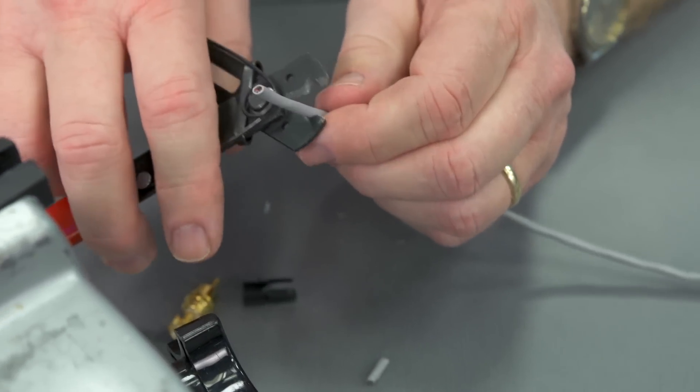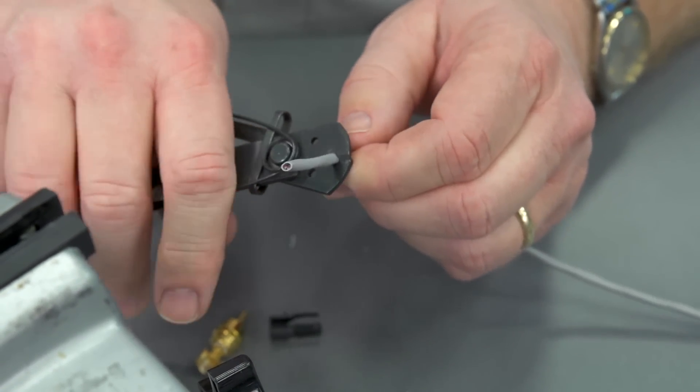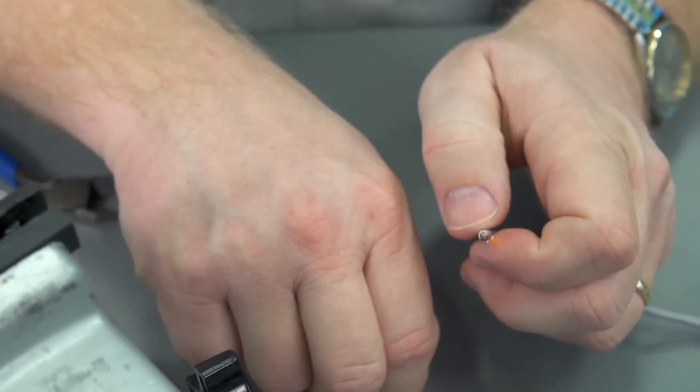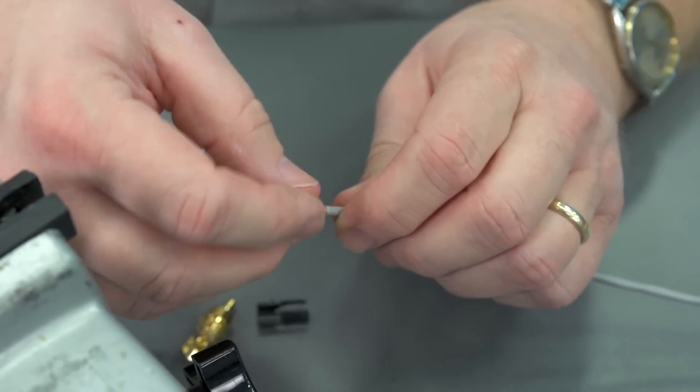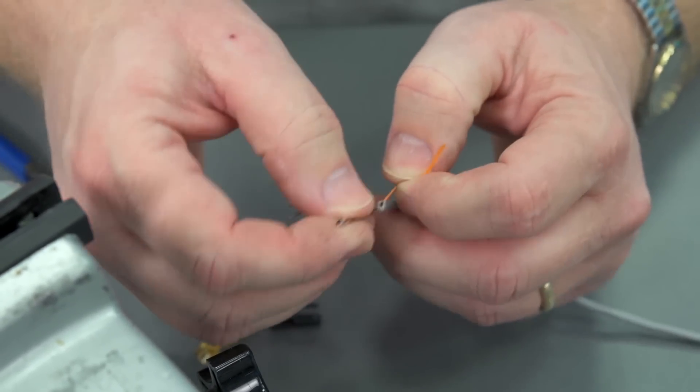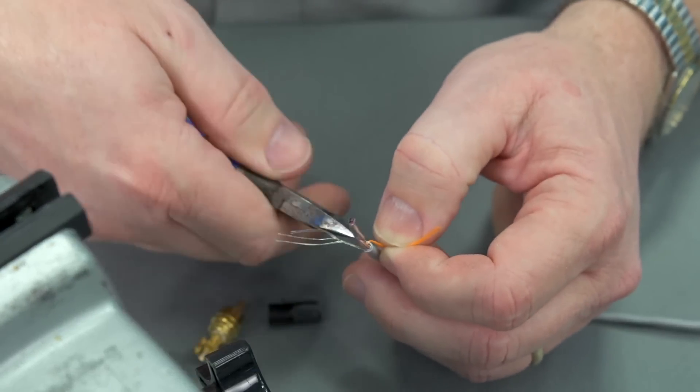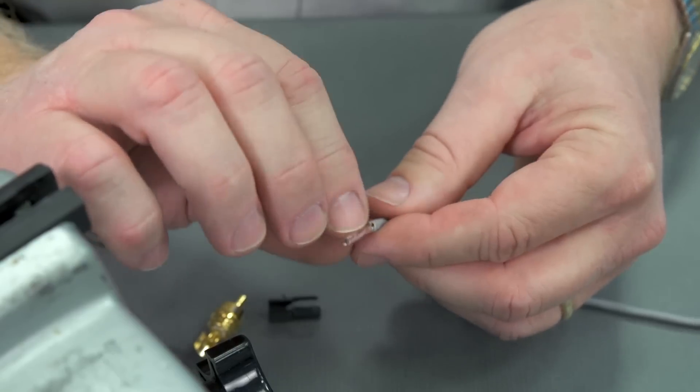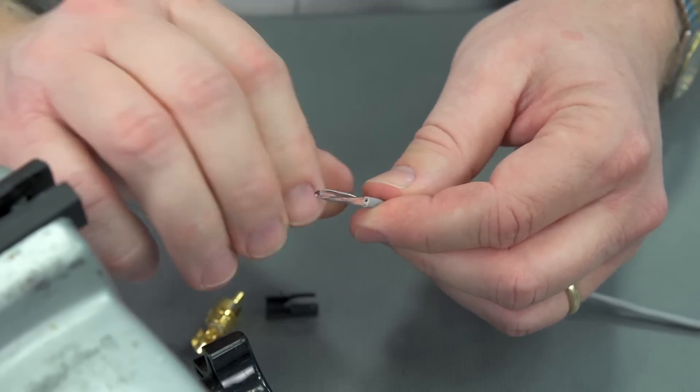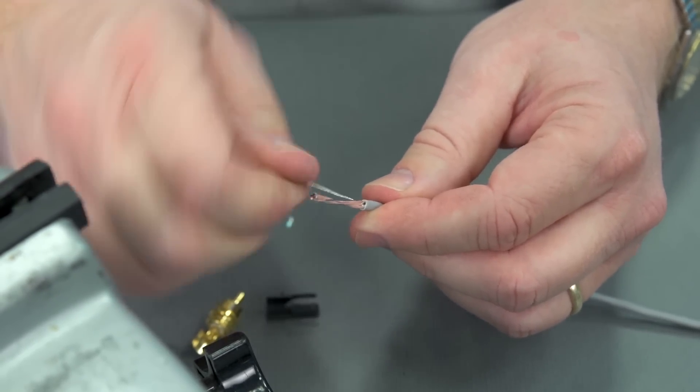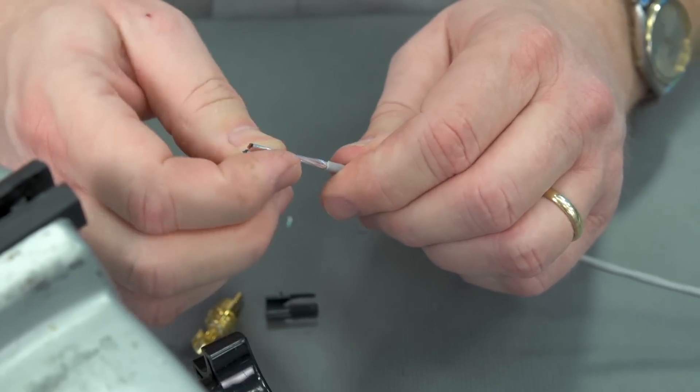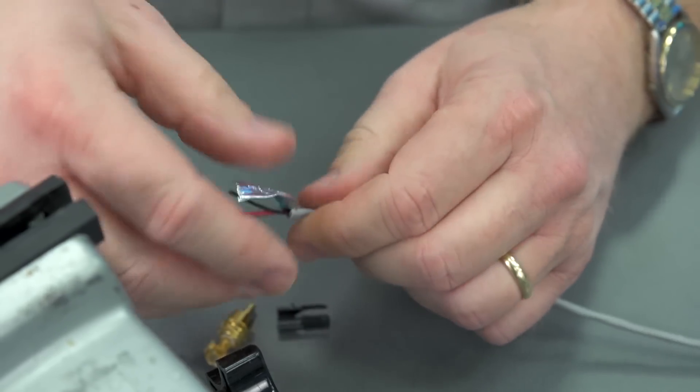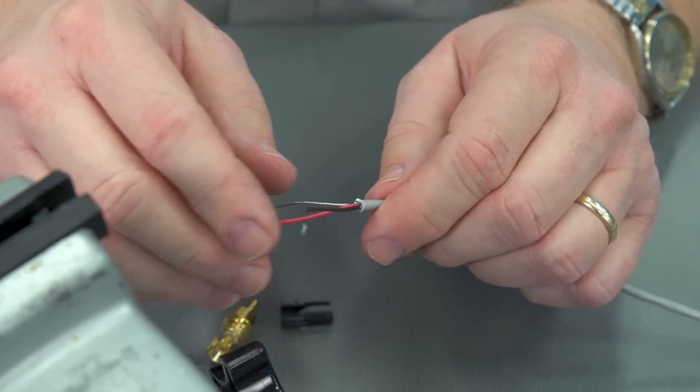Then I can cut the conductors to length. We're going to pull off the outer jacket, we can see the nylon here, go ahead and clip that off. Here's our drain wire, and we'll twist that together. Here's our foil shield that we're going to remove, and that came off pretty easily.